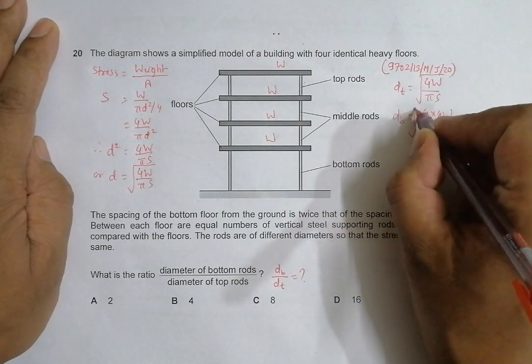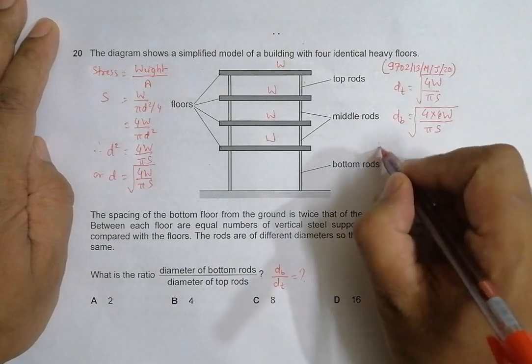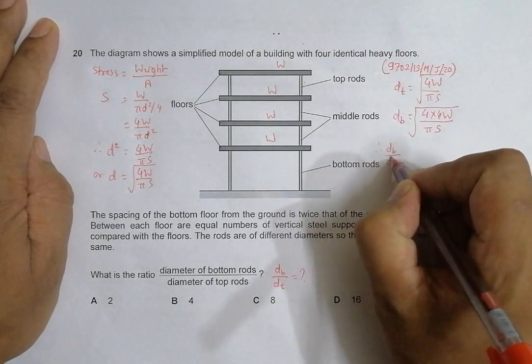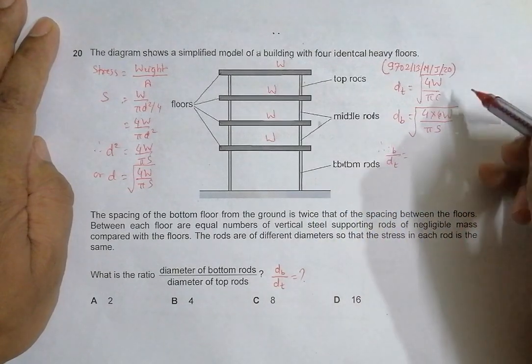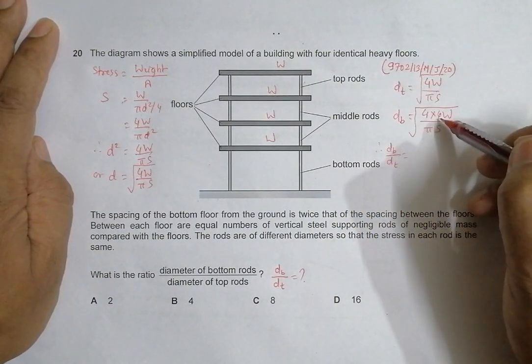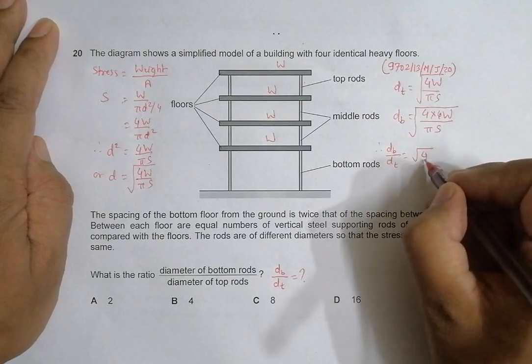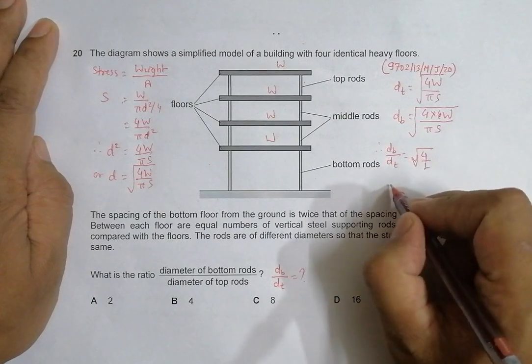Therefore, D bottom divided by D top equals—let's see, 4 and 4 cancel, π cancels, S cancels, 4W and W simplify. What remains is only the square root of 4 to 1, which equals 2 to 1.